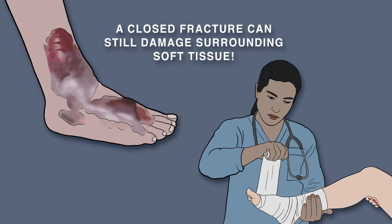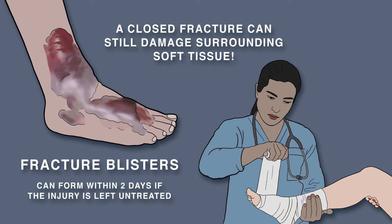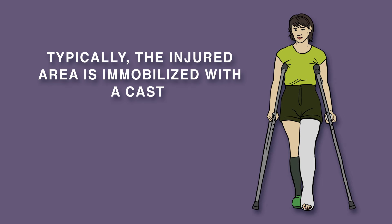A closed fracture can still damage surrounding soft tissue, and this results in fracture blisters. These can form within two days if the injury is left untreated. Typically, the injured area is immobilized with a cast.